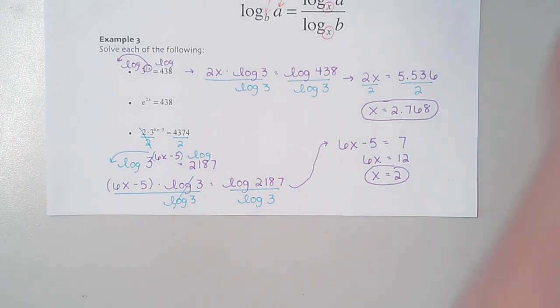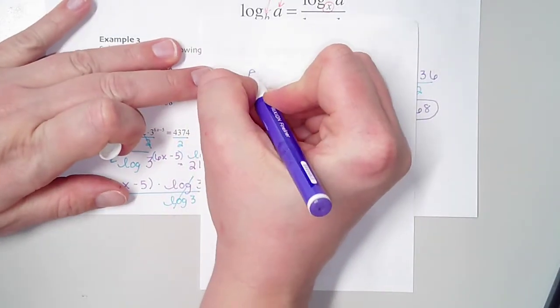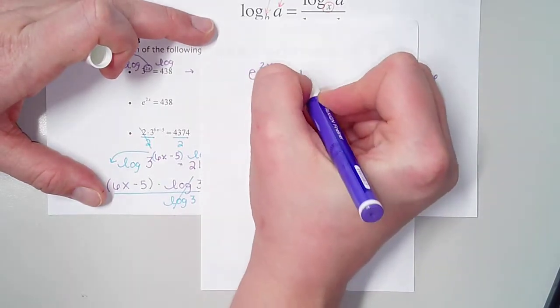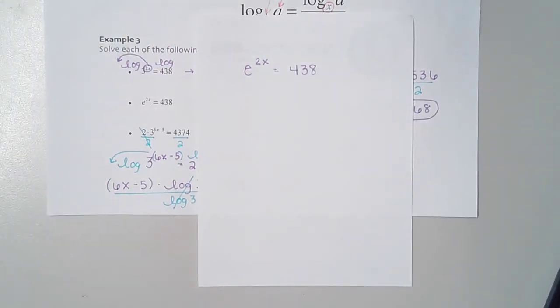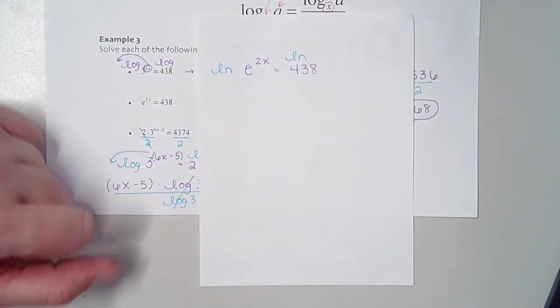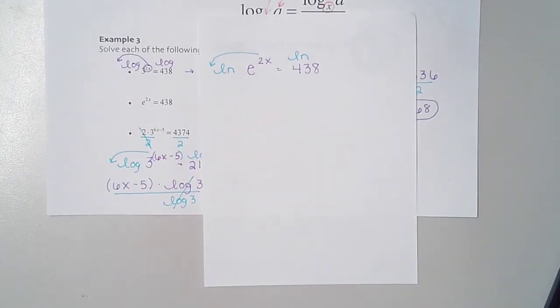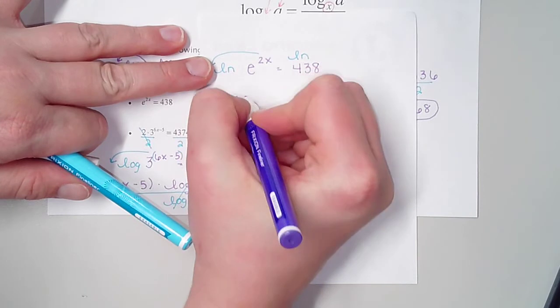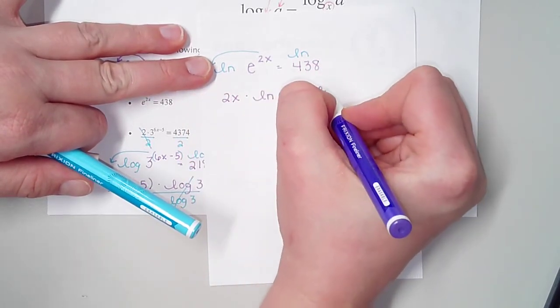Let's talk about the one with the e. You could technically do this one the exact same way with a common log on each side, but there's actually a way to do it that's even easier. I have e to the power of 2x equals 438. This is the only exception to when I said we'll always use common logs. Because this has an e in it, I have another type of log that my calculator will do, and that's the natural log. Natural logs have a base of e. I'm going to take a natural log on each side. Bring this 2x down in front. Now I have 2x times the natural log of e equals the natural log of 438.